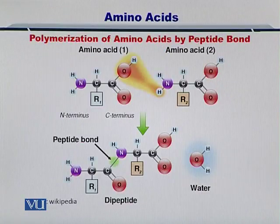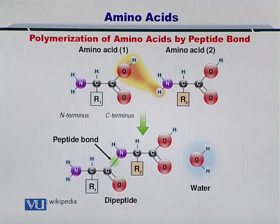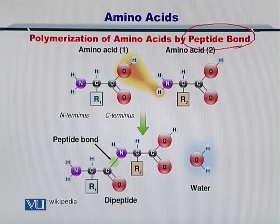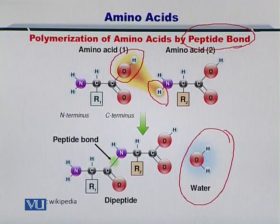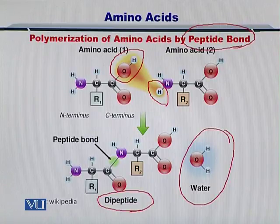How do two amino acids come together? As a result of the process in which a peptide bond is formed, the C-term of one amino acid gets attached to the N-term of the other amino acid. Water is released in the process, while the two amino acids come together to form a dipeptide. This is the polymerization of amino acids by formation of a peptide bond.